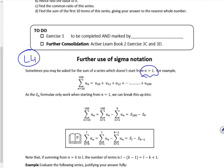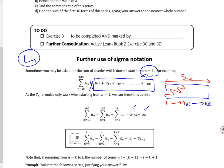It says sometimes you may be asked for ones that don't start at n=1. So if you look at this one, from 10 to 100, it starts at 10 and goes up to 100. So what I'm going to do, I'm going to do all of them from 1 to 100, but I need to chop off the ones that I didn't want here, which was 1 to 9. So I'm going to chop off the sum from 1 to 9. So it's the sum of the first 100 terms minus the sum of the first 9 terms.